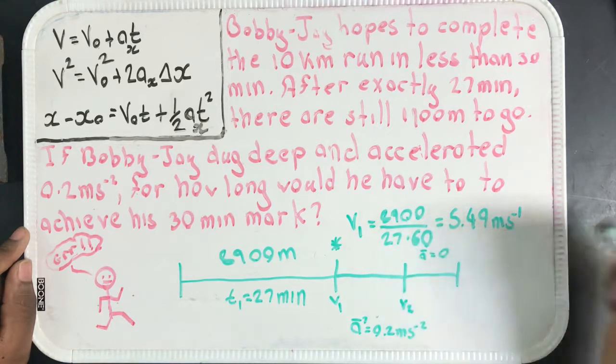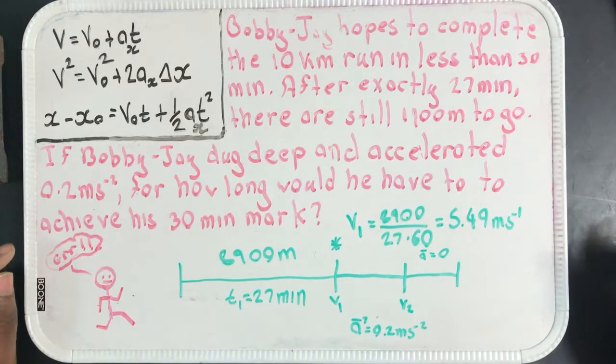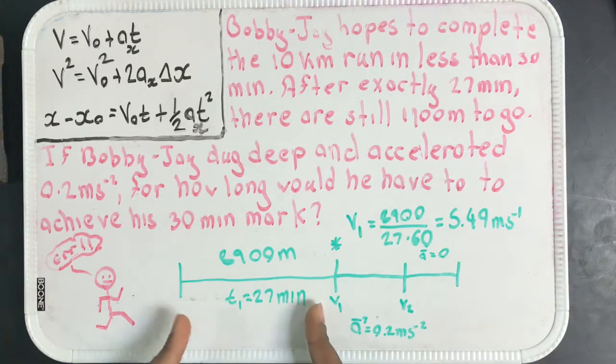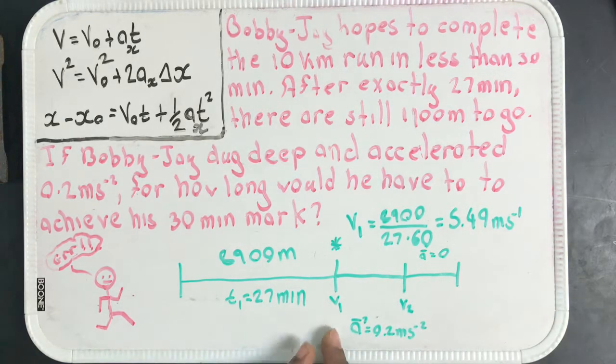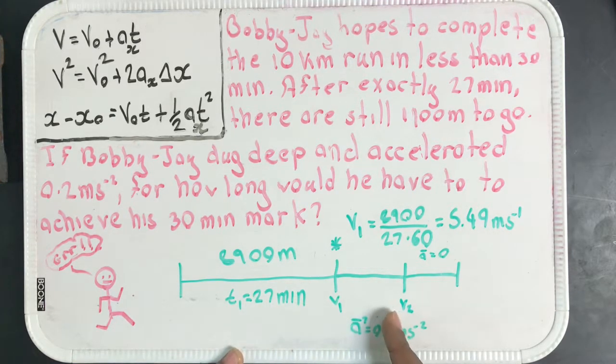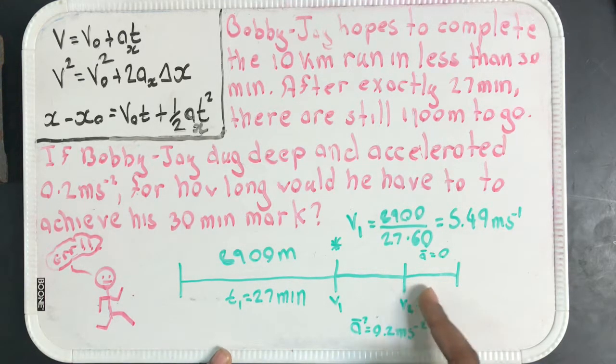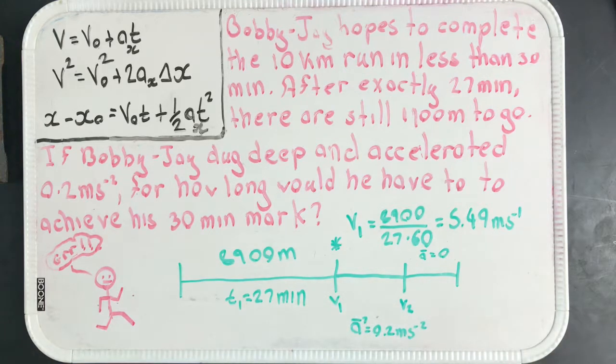Running out of space, so acceleration is 0 at this leg. Right here he runs at a constant pace and his average velocity is 5.49 meters per second. And right here at exactly 27 minutes he kicks the gas and he starts accelerating. So he accelerates from 5.49 meters per second to some other final velocity, and right here he cruises on to victory.